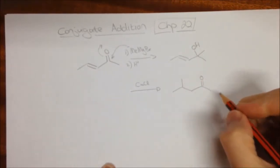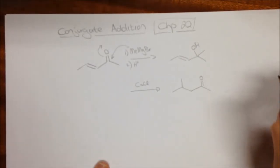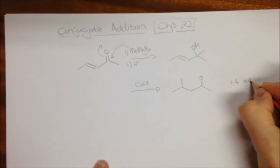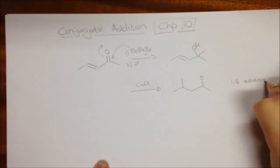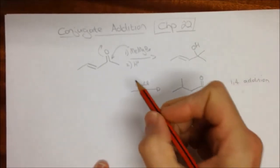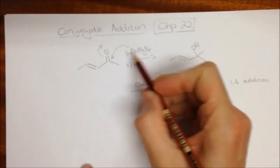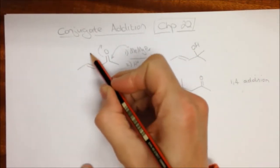This second step is called conjugate addition. It has a couple of other names. The first other name is known as a 1-4 addition, and that comes from the reason is that we are adding to, as we add this nucleophile, it's adding to this position over here.